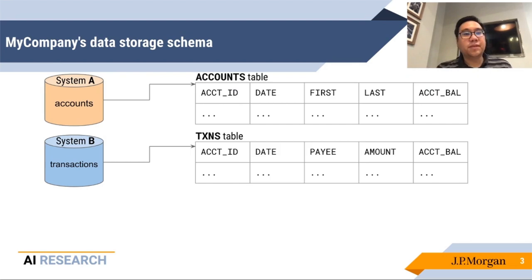Suppose I'm a sysadmin and I have two databases, A and B, that store data about accounts and transactions respectively. The accounts database has one table called accounts. It has columns that are called account ID, date, first, last, account balance, and so on.